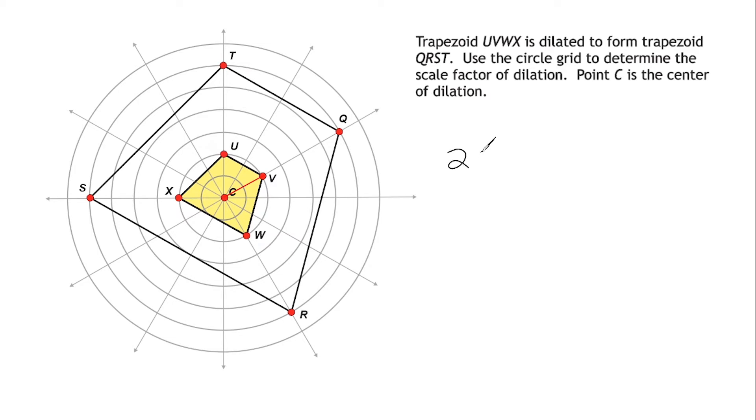Now what we're going to do is we go back to our center of dilation, and we go all the way to the corresponding point of V, which would be point Q. So starting at point C, we would have to go outwards 1, 2, 3, 4, 5, 6 to get to point Q. So we would say the distance from C to Q would be 6.